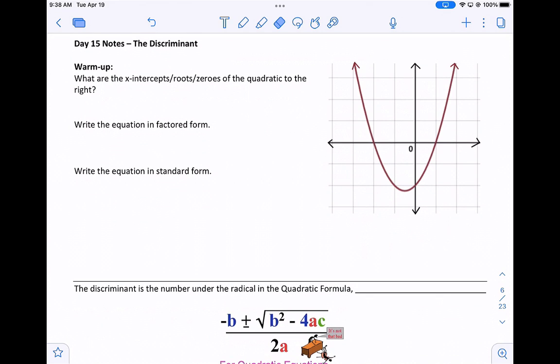Today, we're going to look at the discriminant warm-up. What are the x-intercepts, also called the roots and zeros, of the quadratic to the right?